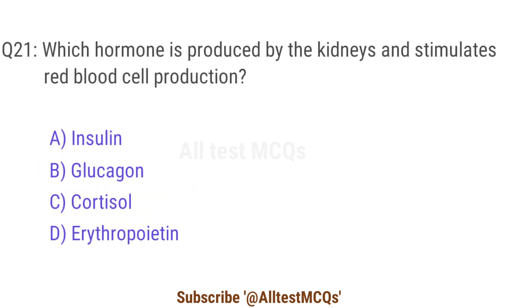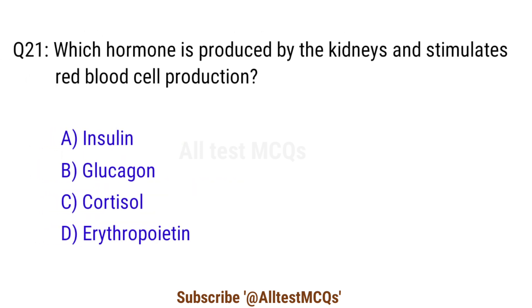Question 21. Which hormone is produced by the kidneys and stimulates red blood cell production? The right answer is option D. Erythropoietin.